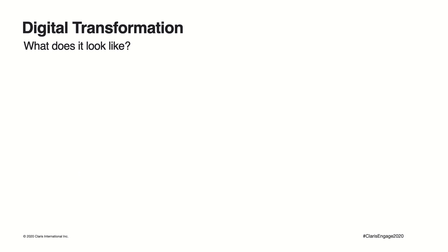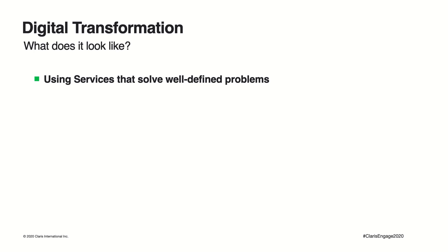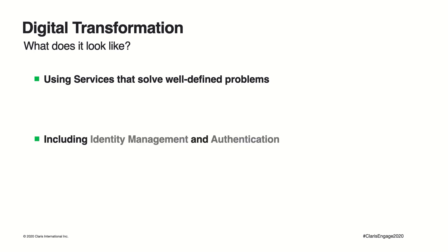What we mean by digital transformation is basically ways to digitize your workflows — do the same things without moving data in physical form between departments. Ideally, you want to do that without reinventing the wheel. Effective digital transformation makes use of services that have already solved certain problems, and you stitch those services together via APIs and orchestrate your workflows. Those solved problems include identity management and authentication.